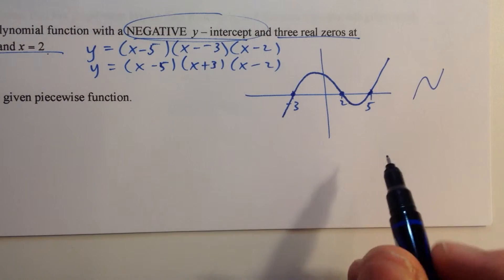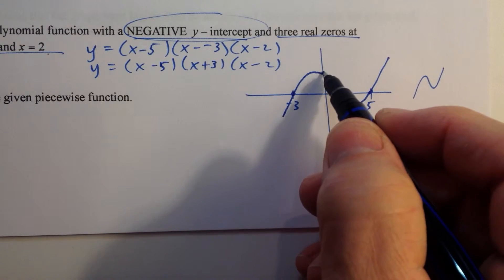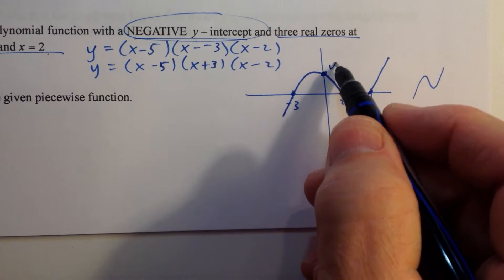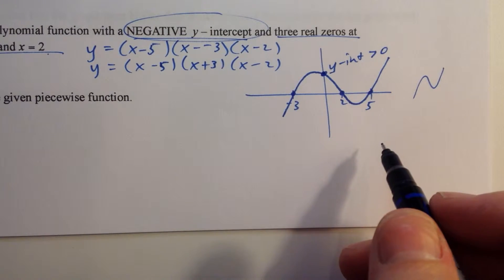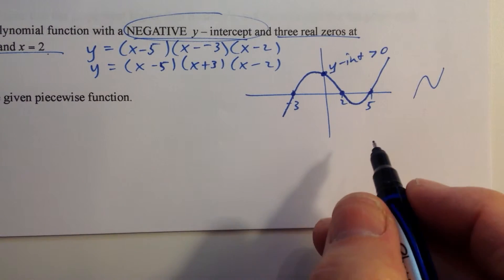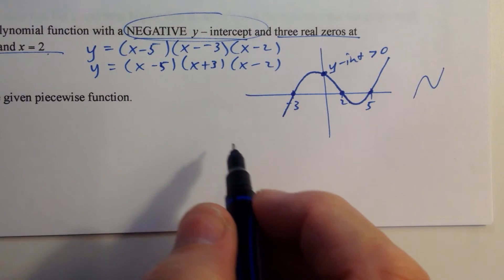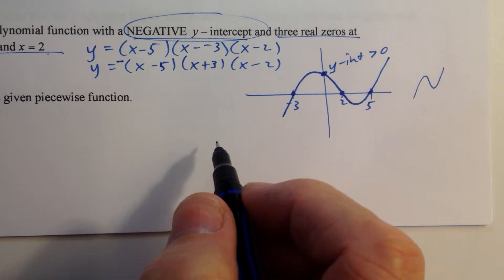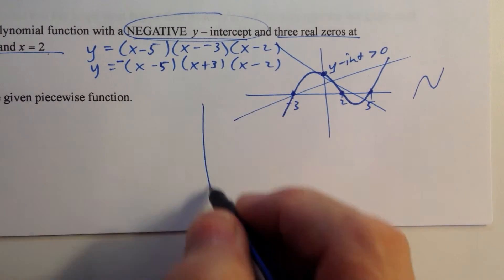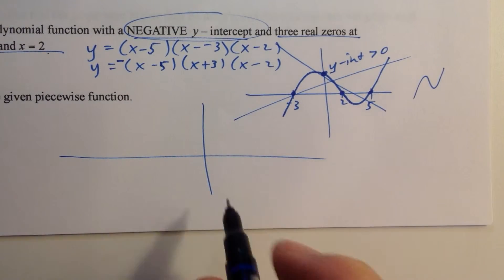We can see we have a y-intercept that's actually positive, greater than zero. So in order to fix that, we would have to do something to this function. The thing that we would have to do is put a minus sign there.